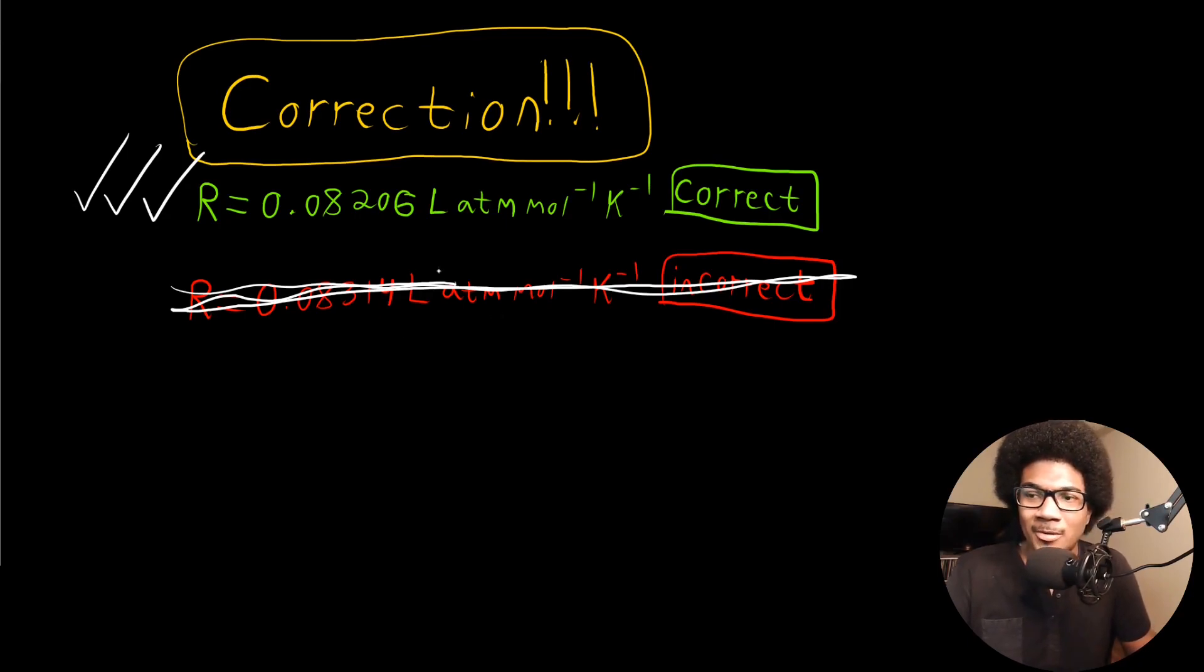Not the value that I'm going to use in this video. This 0.08206 is the correct value for the gas constant. With that correction let's move on to the video.